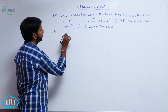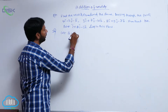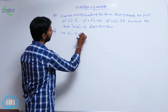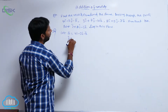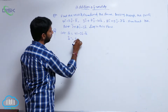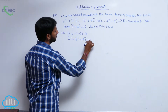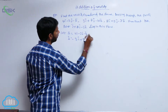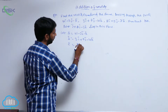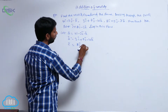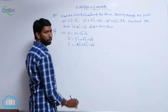Let the given points be: ā = 4î - 3ĵ - k̂, b̄ = 3î + 7ĵ - 10k̂, and c̄ = 2î + 5ĵ - 7k̂.